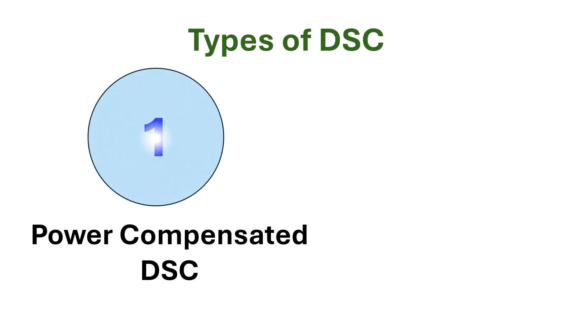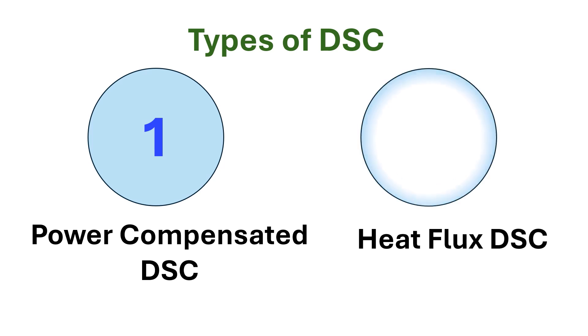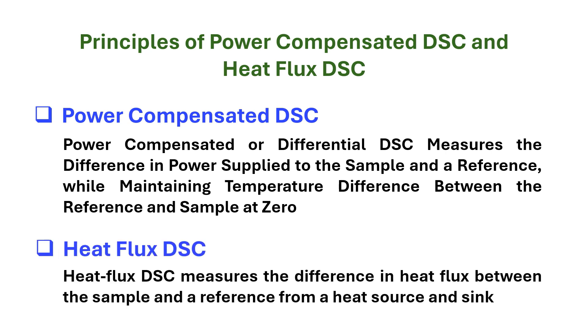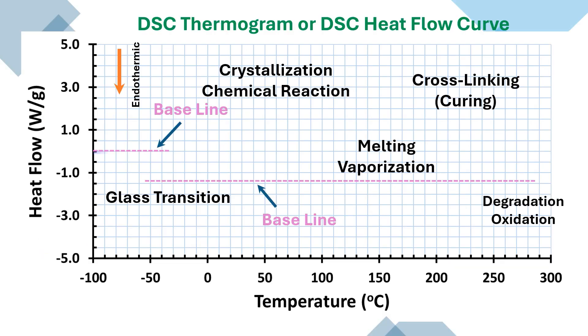There are two types of DSC based on their principle of operation: power compensated DSC and heat flux DSC. Power compensated DSC measures the difference in power supplied to the sample and a reference while maintaining the temperature difference between the reference and sample at zero. Heat flux DSC measures the difference in heat flux between the sample and a reference from a heat source and sink.